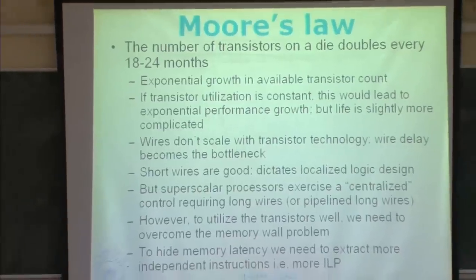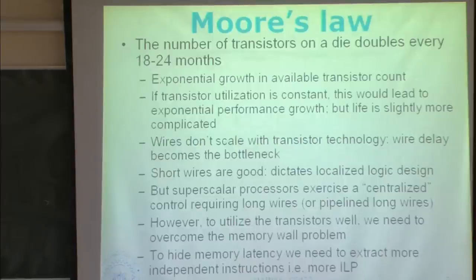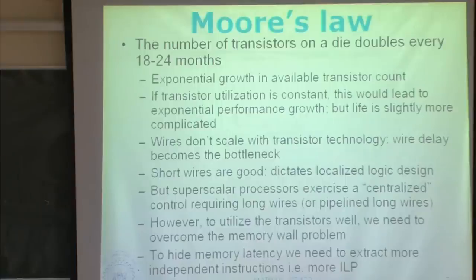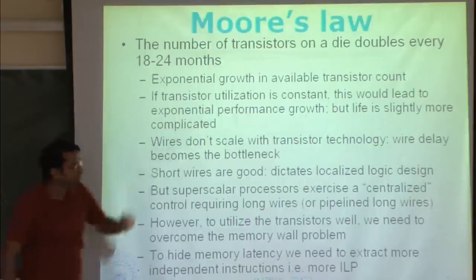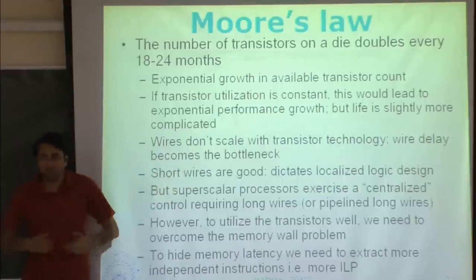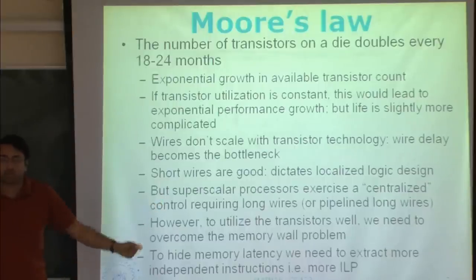If transistor utilization is constant, exponential transistor growth would lead to exponential performance growth, but life is slightly more complicated. Performance doubling every 18 to 24 months is not Moore's Law — that's a derived claim assuming constant transistor utilization, which is actually not true. The problem is that wires don't scale with transistor technology — wire delay becomes a bottleneck. Wire delay remains more or less constant while transistors get faster, so communication becomes more costly. Short wires are good, which dictates a localized logic design. Superscalar processors exercise centralized control requiring long wires — the issue queue controls everything and decides what instruction will issue.